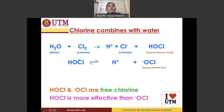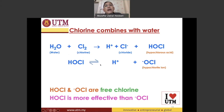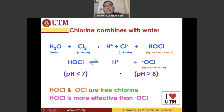If instead you want to make the water more alkaline, that means you are taking out hydrogen ions. Le Chatelier's principle says the reaction will tend to go in the direction that produces more hypochlorite ion. So at pH greater than 8, we will be seeing more hypochlorite ion, and at pH less than 7 (acidic conditions), we will be seeing more hypochlorous acid.